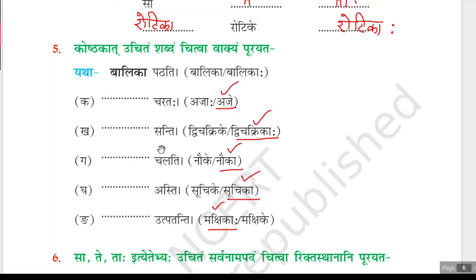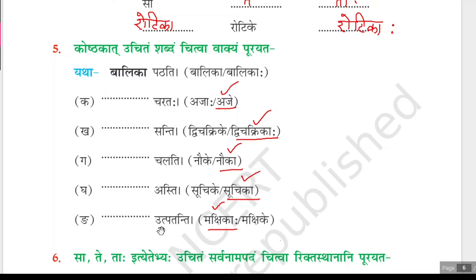Next, dash santhi — santhi is bahuvachana kriyapadam, so vichakrikaha (bahuvachanam) is correct. Next, dash chalati — chalati is ekavachana, so navuka (ekavachanam) is correct: navuka chalati. Next, dash asthi — asthi is ekavachana, so suchika (ekavachanam) is correct: suchika asthi. Next, dash utpatanti — utpatanti is bahuvachana, so makshikaha is correct: makshikaha utpatanti.